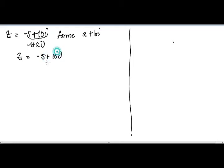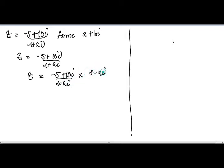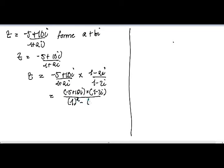We have (5 + 10i) divided by (1 + 2i). What we do in this case is first of all, we multiply by the conjugate to get the form that we want. So we multiply by (1 − 2i) divided by (1 − 2i). This gives us (5 + 10i)(1 − 2i) all over (1² − (2i)²), which is the difference of two squares.